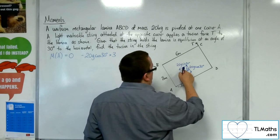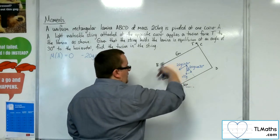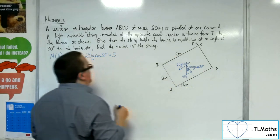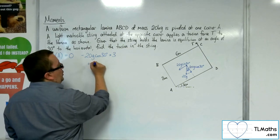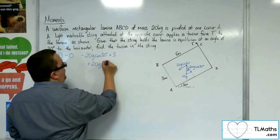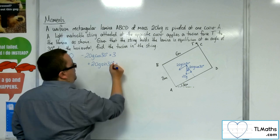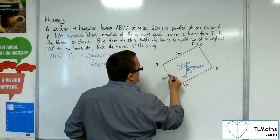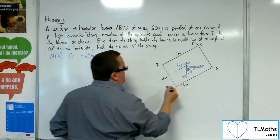I've then got the 20G sine 30, which is going that way, so that's going to go round anticlockwise, so that's positive. So plus 20G sine 30 times by its distance, so if I projected along, if that's 3 metres, then that's 1.5 metres.